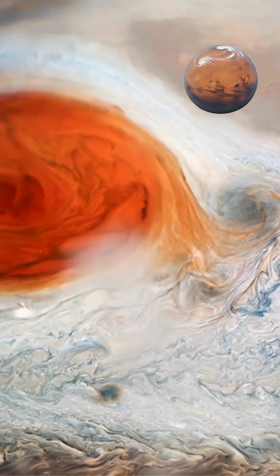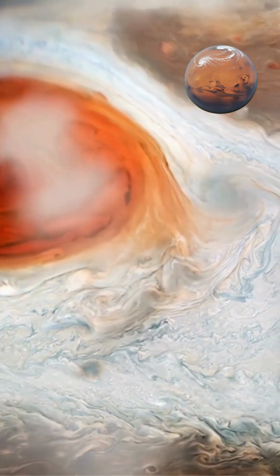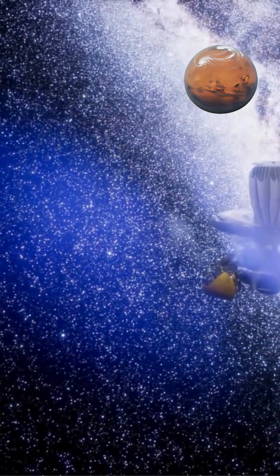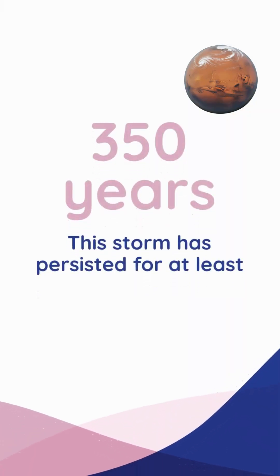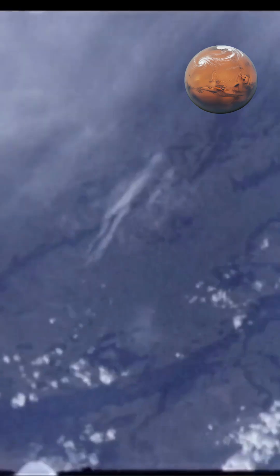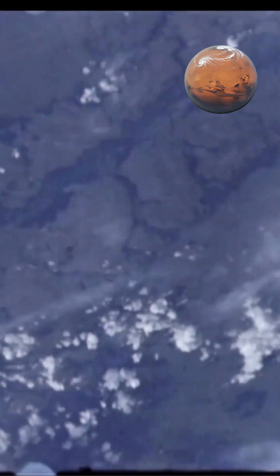The Great Red Spot, a massive storm larger than Earth, demonstrates Jupiter's dynamic atmosphere. This storm has persisted for at least 350 years, showing how stable these atmospheric patterns can be.